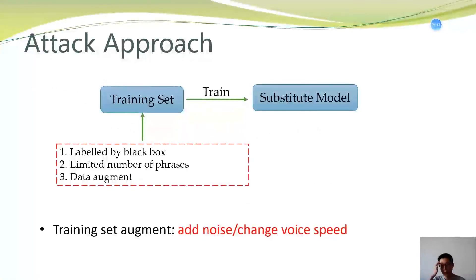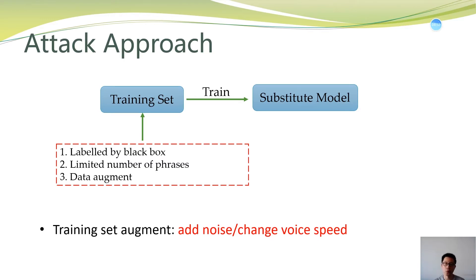Now for the details: to train the substitute model, first we need a training set labeled by the black box model. We propose using a limited number of phrases, since our aim is to attack the black box devices. We are only interested in several phrases like 'open the door,' 'call 911,' etc. We also propose using data augmentation to extend the training set, since using only a limited number of phrases makes the training set very small. Specifically, we add noise and change voice speed on the dataset.